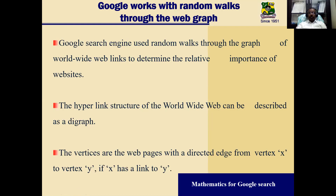Finally, search engines. Through Google, which is used throughout the globe, voluminous information is stored on servers. Just give a keyword and you get a pouring of related information. Google's search engine uses random walks on a graph — the worldwide web links — to determine the relative importance of hyperlinks. The structure of the WWW can be depicted as a directed graph where vertices represent web pages and directed edges represent hyperlinks from one page to another.